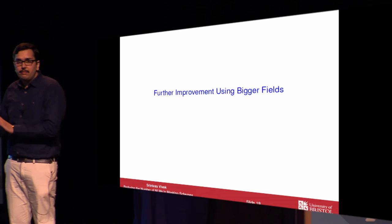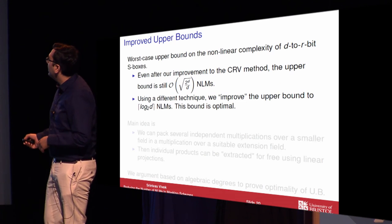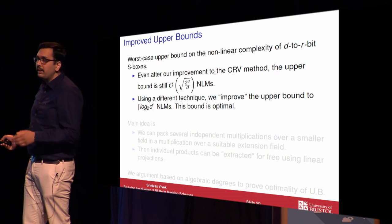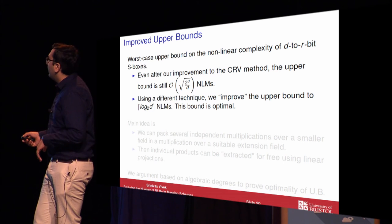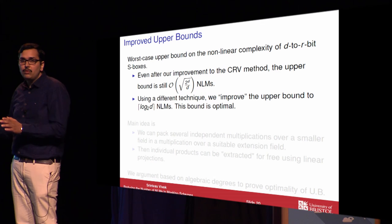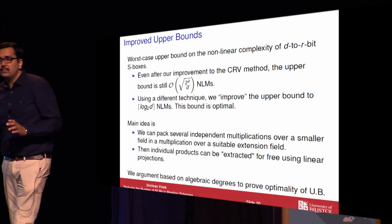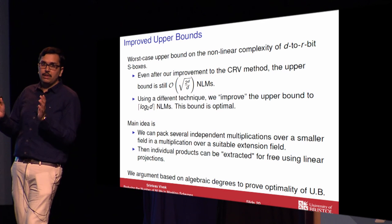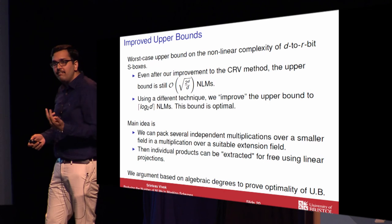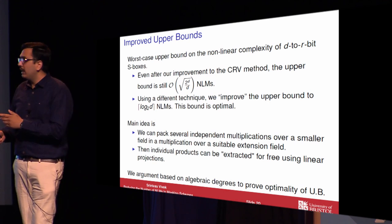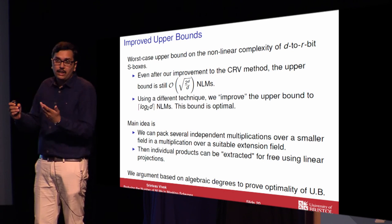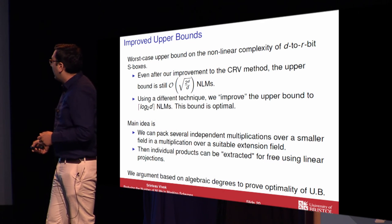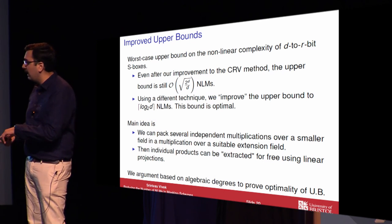The remaining results are mainly of theoretical interest. In spite of our improvement to the CRV method, the upper bound to evaluate any D-to-R bit S-box is still of the order square root of 2 power D over D. Using a different technique, we drastically improve this upper bound to logarithm of D. The main idea is the observation that we can pack several independent multiplications in a smaller field into one multiplication in a big field extension, and then extract individual products for free using linear projections.